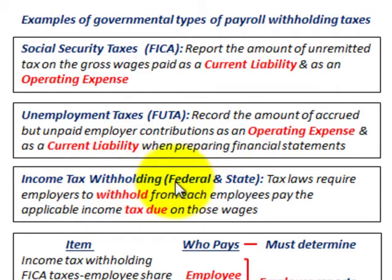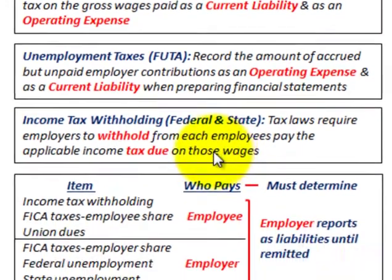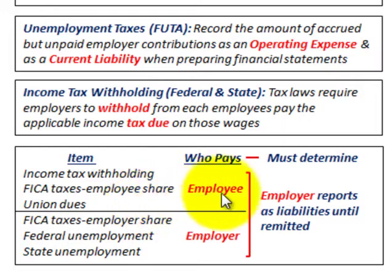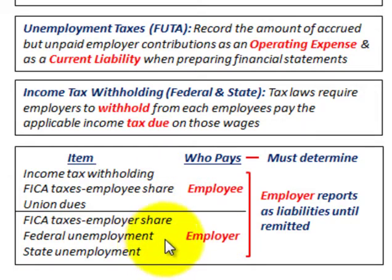For income tax withholding, you'd have both federal and state. Tax laws require employers to withhold from each employee's pay the applicable income tax due on their wages. You have to determine your payroll deductions, classify them by the various items, and then determine who pays what — separating out what the employee pays from what the employer pays. In either case, the employer reports these as liabilities until they're remitted.